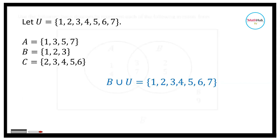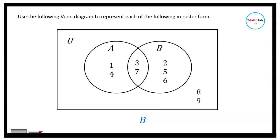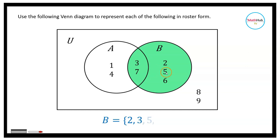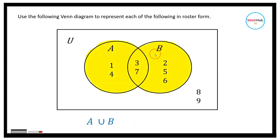In this next exercise, we use a given Venn diagram to find sets in roster form. Set B includes everything inside the B circle — that region gives us {2, 3, 5, 6, 7}. For A union B, we include everything under A or B, so that is the set containing 1, 2, 3, 4, 5, 6, and 7.